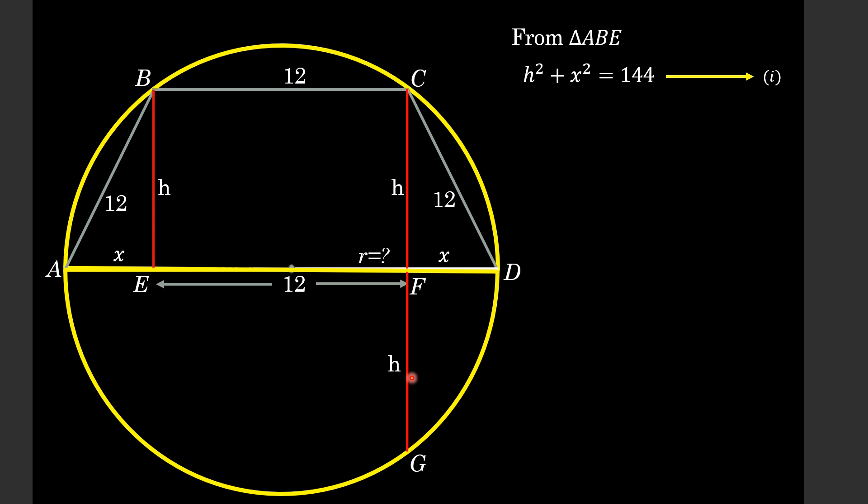Now, by chord-chord power theorem, this length CF multiplied by FG will be equal to AF multiplied by FD. So, by chord-chord power theorem we can write this one.